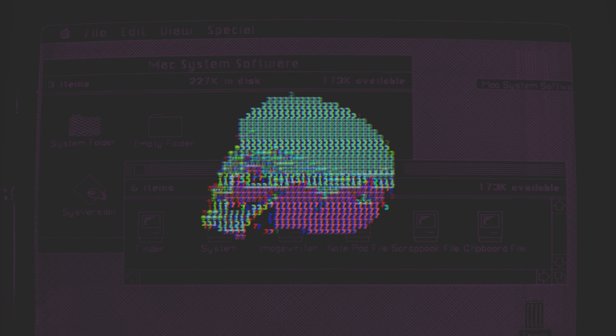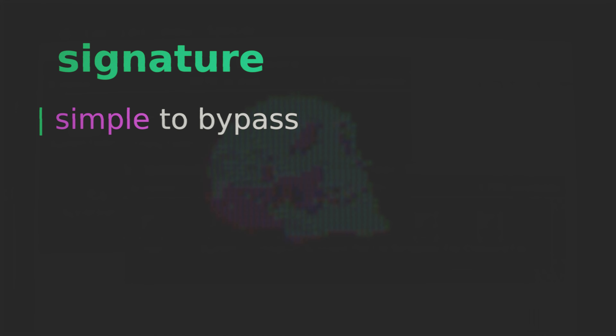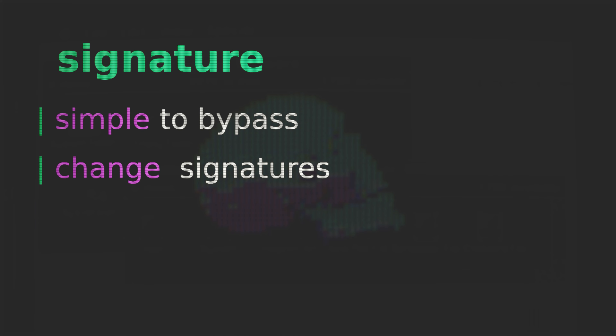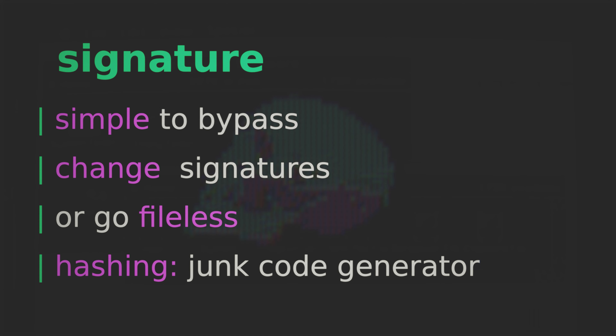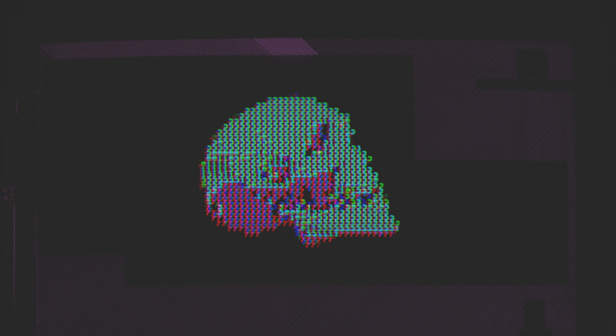Signatures might get incorporated into Yara rules, and any new files transferred to a system will be scrutinized via pattern matching. We can also consider hashing detection as a simple form of signature detection — any discovered malware will be hashed using MD5 or SHA256 and used as a signature to analyze new files against. While it can be time-consuming to bypass signature detection, it's relatively simple: if a malware author knows what signatures are being used — for example by looking at open-source Yara rules — they just need to change those signatures.